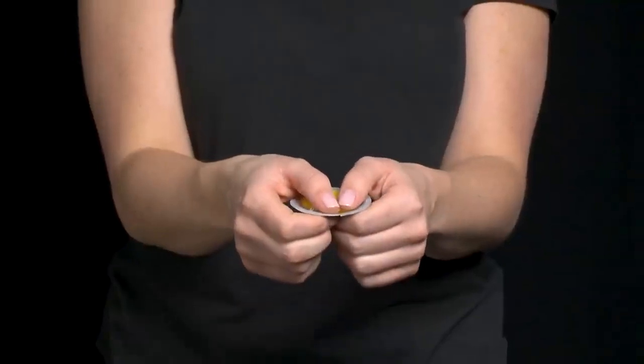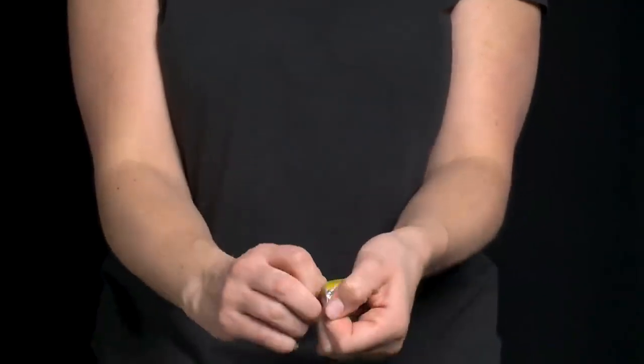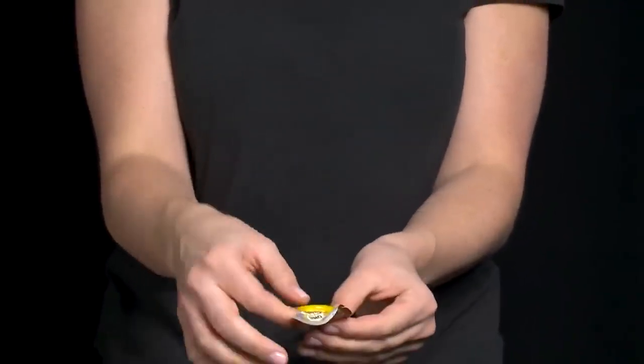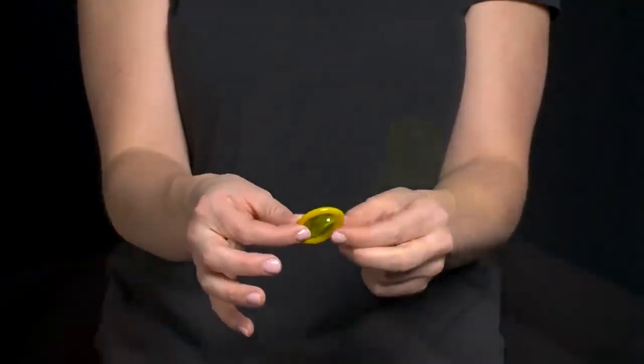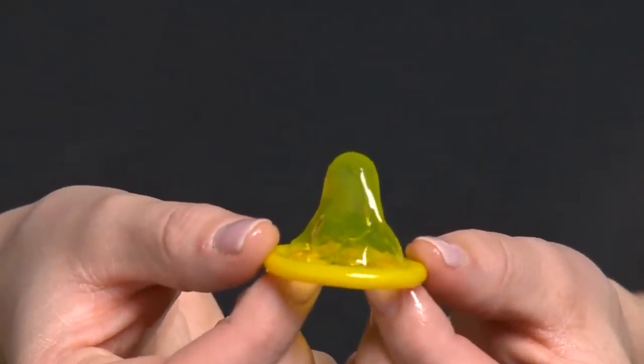I am now ready to open the condom package. To open a condom, push the condom over to one side and then rip down the other side of the package. Be careful! Fingernails and jewelry can damage condoms. Never use teeth or scissors to open a condom package.